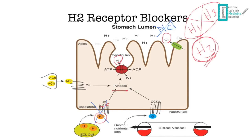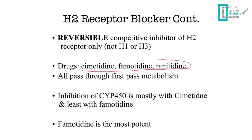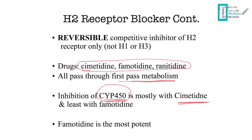The problem with H2 receptor blockers is that they block the receptor reversibly. Drugs in this class include cimetidine, famotidine, and ranitidine — all undergo first-pass metabolism in the liver. Most inhibit cytochrome P450, especially cimetidine, which is the most important CYP450 inhibitor. This creates drug-drug interactions; cimetidine notably increases plasma concentrations of oral anticoagulants, tricyclic antidepressants, and ethanol. Famotidine is the most potent of the three.